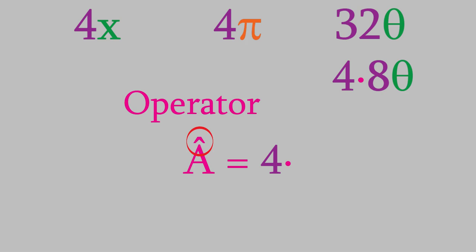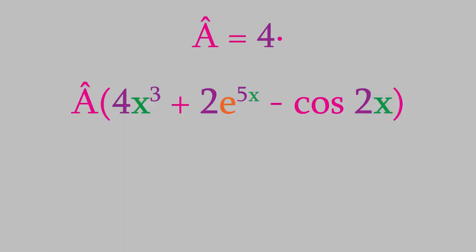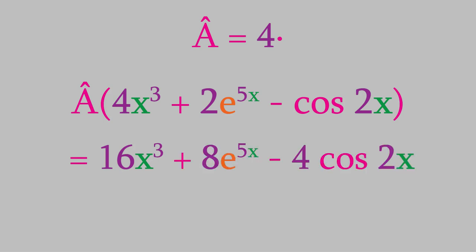We could use that symbol to write the three functions above in this way. Now, suppose we write this function. In this case, the parentheses tell us that the operator a-hat is operating on the entire function that follows it. So the result of this operation would be 16x cubed plus 8e to the 5x minus 4 cosine 2x.